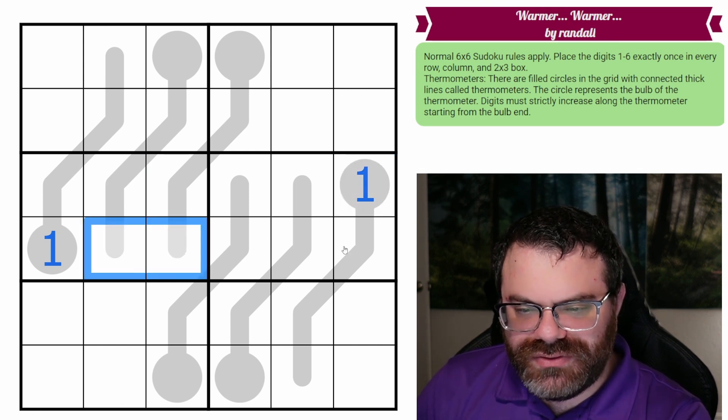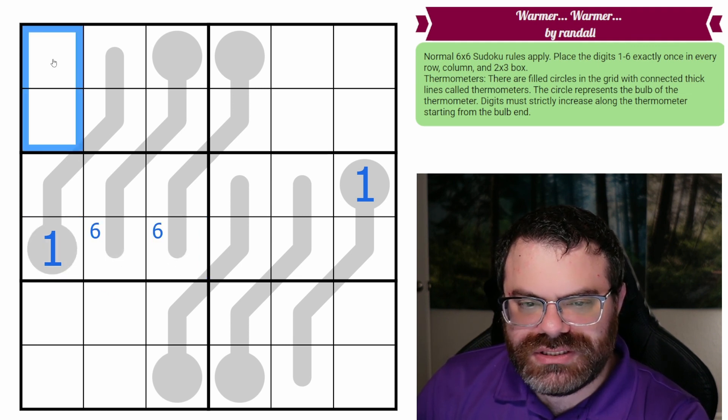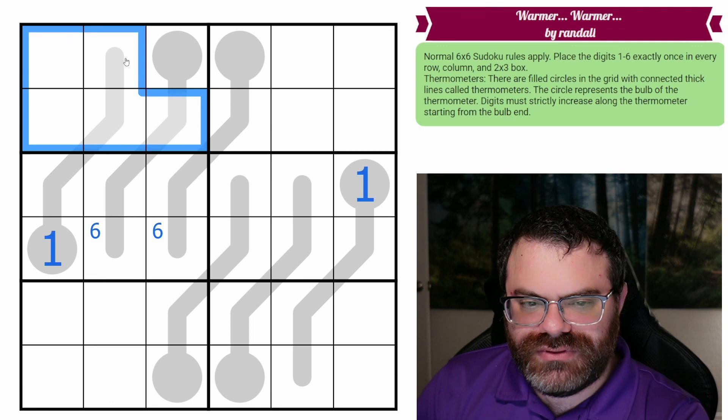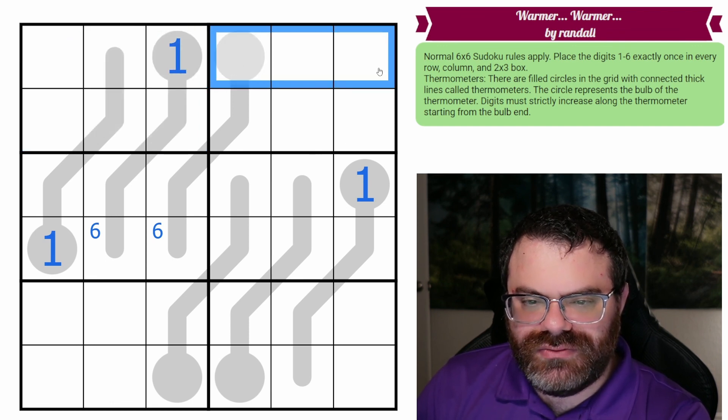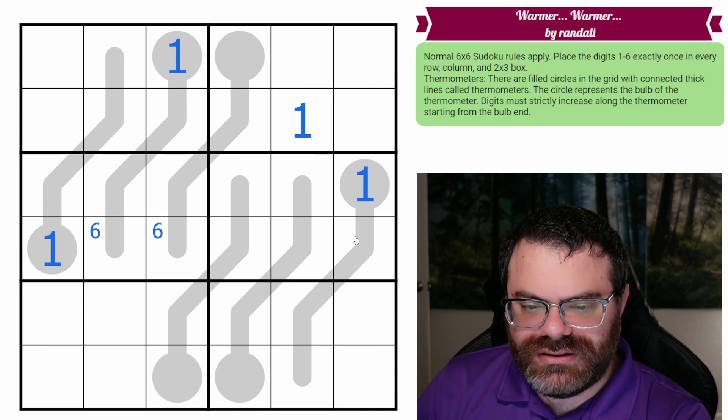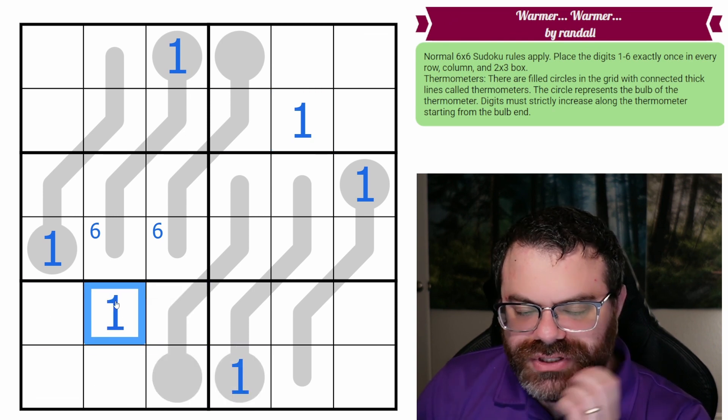Sixes are a little bit different. We know there's a six in one of these two. Oh, this one looks up and all of these are middle of thermos or ends. So that's a one. And then the one goes here because it can't go there. The one goes there. I think we can finish the ones. There we go. So ones are done. Nice.